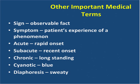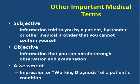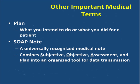Putting together all the information you gather and your plans for managing patients involves several more medical terms. Subjective information is information told to you by a patient or another provider that you cannot confirm objectively — symptoms are subjective. Objective information is information you obtain through observation, examination, or testing — signs are objective. Assessment is your impression, or working diagnosis — what you think is going on with a patient's condition. A plan is what you're going to do or what you did to take care of that patient.